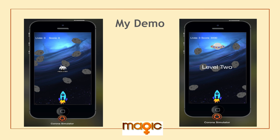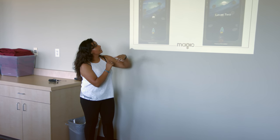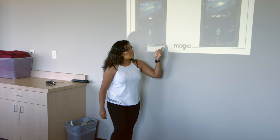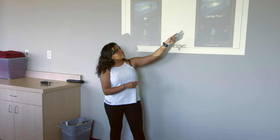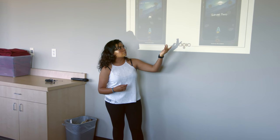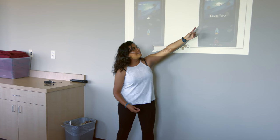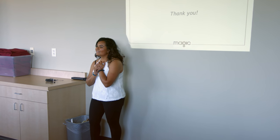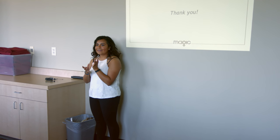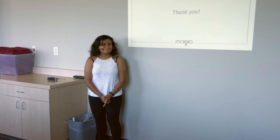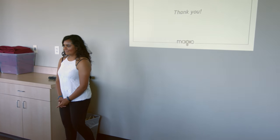Here are pictures of my spaceship game. Here is the spaceship, and here are the asteroids coming down. Here is the start button. You can move it like this, and if you double-click it, it shoots. The lives are three and the score is zero currently. Here it is at level two — as you can see, it still has three lives. The score is 3,000, so it passed 2,000, meaning it's level two. Here is the opponent, and the asteroids are there. Thank you everyone for being here, and thank you to Magic for giving me this opportunity and introducing me to Shami. Thank you, Shami.